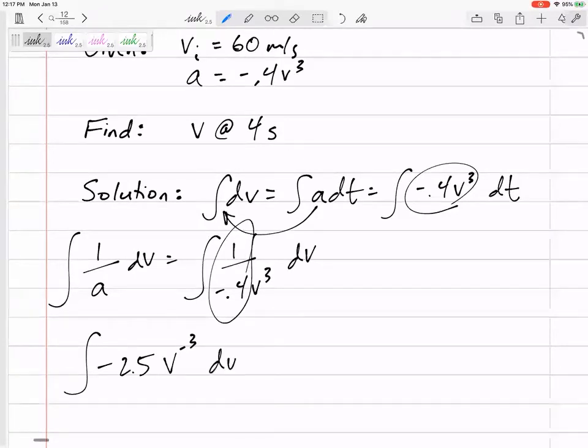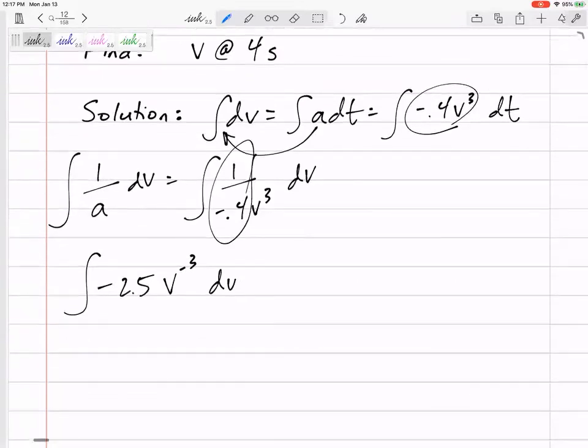Let me just rewrite this. What's one over 0.4? 2.5. So integral negative 2.5, and what's one over v cubed? I'd prefer to write it v to the negative cubed. And so I could do the integral right there. On the right hand side, all I'm left with is integral dt.